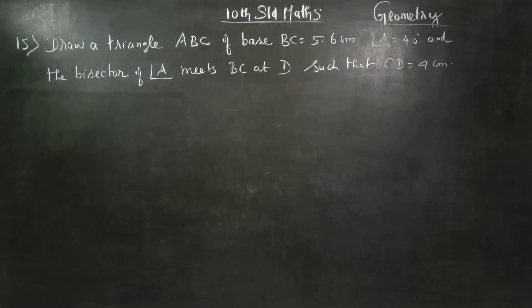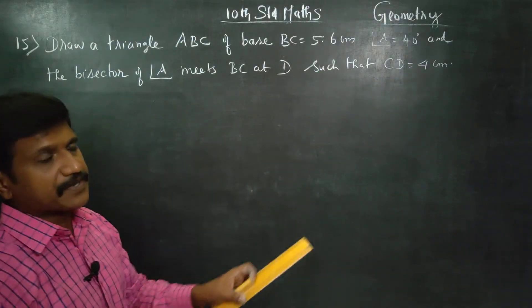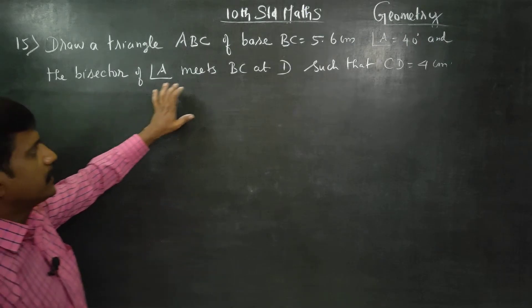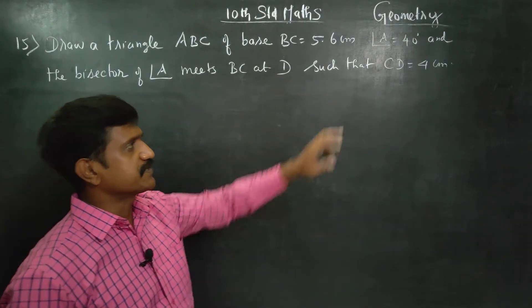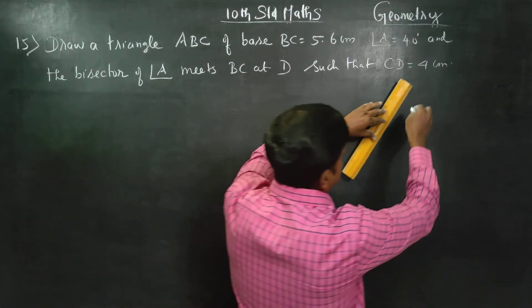Dear 10 standard students, I am Etro Korunagaran. Draw a triangle ABC of BC is equal to 5.6 cm, angle A is equal to 40 degree and the bisector of angle A meets BC at D such that CD is equal to 4 cm. BC is equal to 5.6 cm.